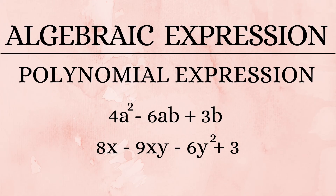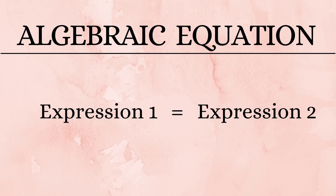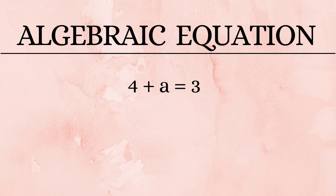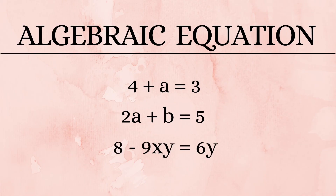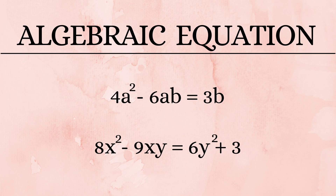Now we come to the final part of our session: algebraic equations. When two algebraic expressions are equated to each other, what we get is an algebraic equation — one expression on the right, one on the left, with an equal sign in the middle. Equations can be simple like '4 plus a equals 3' or '2a plus b equals 5.' With increased complexity: '8 minus 9xy equals 6y' has variables on both sides. We can also include exponents, as in '4a squared minus 6ab equals 3b,' or '8x squared minus 9xy equals 6y squared plus 3.'